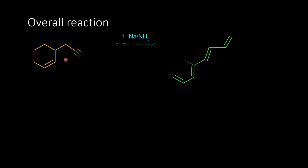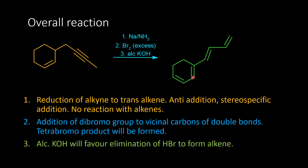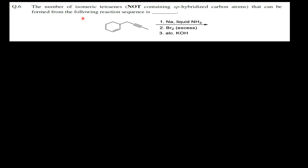So the overall reaction involves two consecutive additions followed by one elimination reaction to form a tetraene. Starting from an alkene and an alkyne system, we get a tetraene. But the question is: how many isomeric tetraenes can be formed?